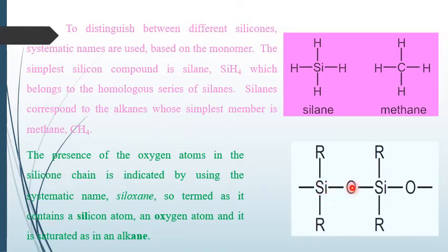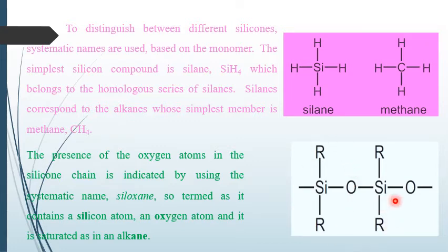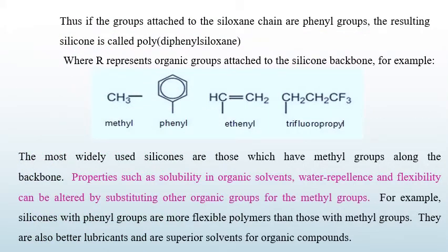Siloxane compounds mainly contain silicon and oxygen atoms, and those silicon atoms are saturated like alkanes, with two alkyl groups attached. One siloxane unit is R₂SiO. When more than one siloxane unit is joined together, it is known as polysiloxane or silicone. Based on which alkyl group is attached to the siloxane, we decide the complete name of that siloxane.